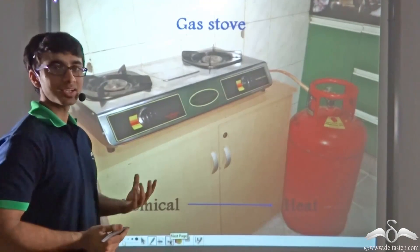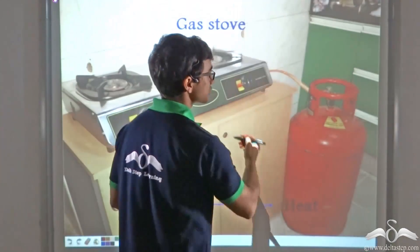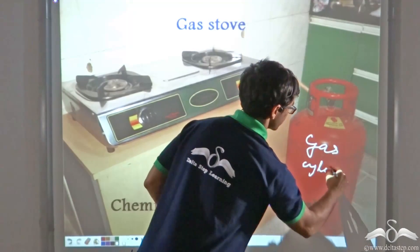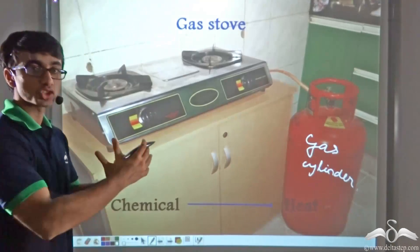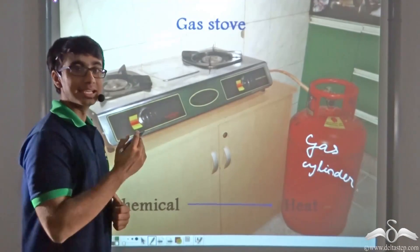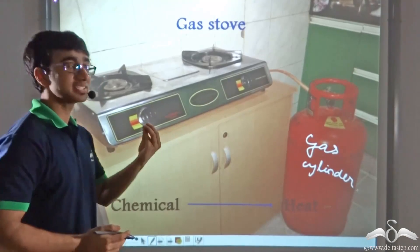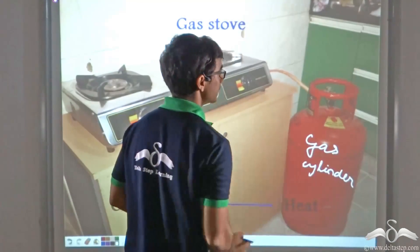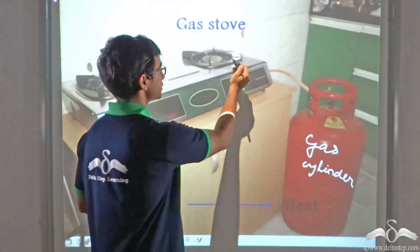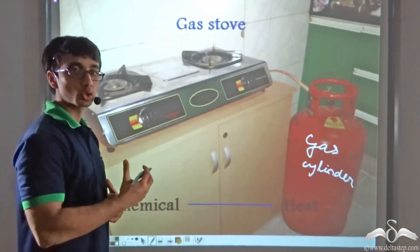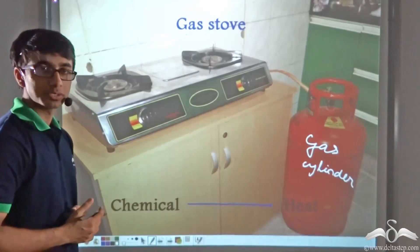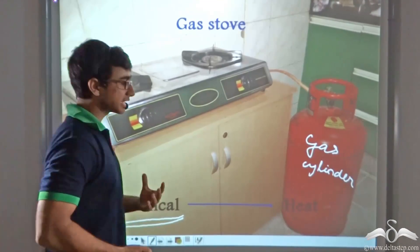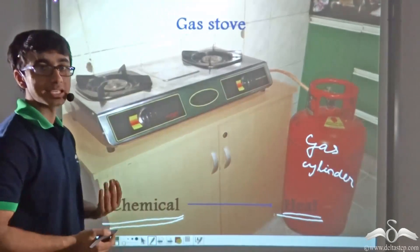Similarly, a gas stove at home is attached to a gas cylinder containing a fossil fuel — liquefied petroleum gas (LPG). When you turn on the knob, LPG flows into the gas stove, and when you light it, you can cook food on the fire produced. Because LPG is a fossil fuel it has chemical energy, and this chemical energy is converted into heat energy, with which we are able to cook.